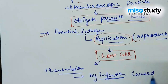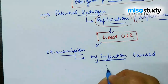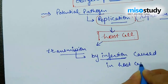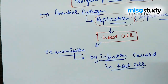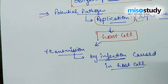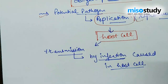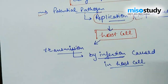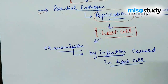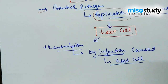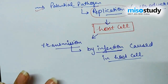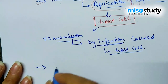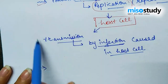The infection is caused in the host cell. It may be further categorized into contiguous and non-contiguous, which can be differentiated on the basis of touch. There are various other categories which we discuss in the chapter only.